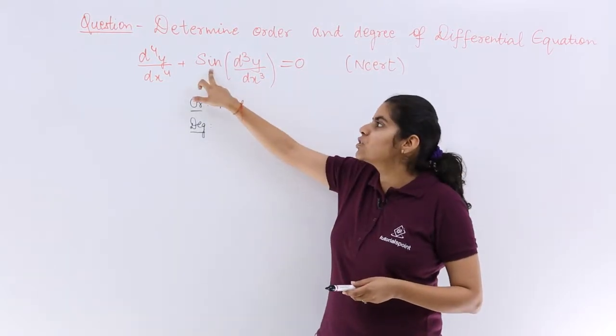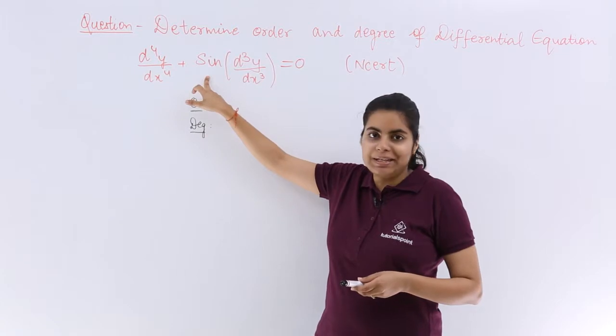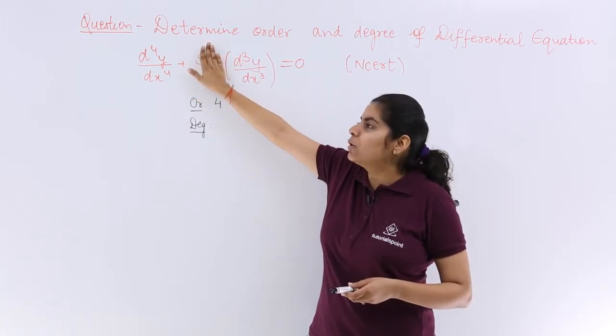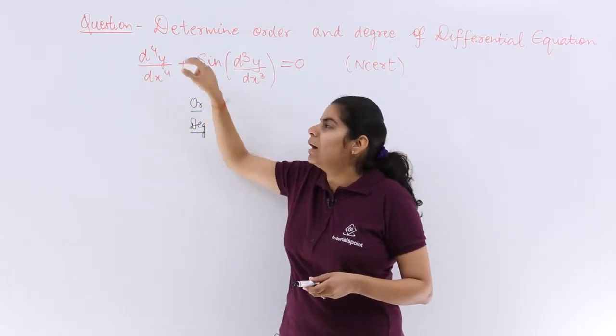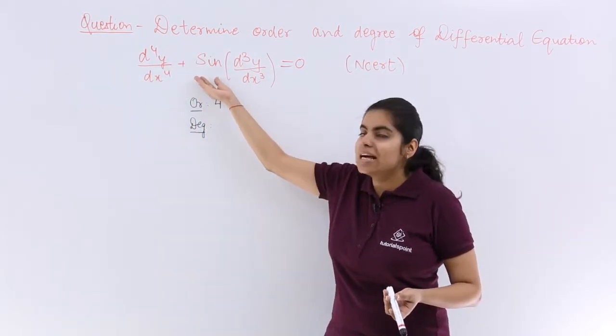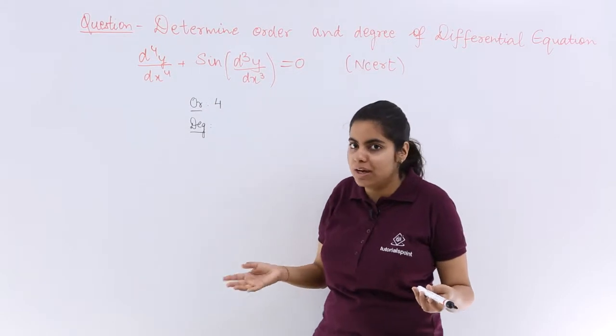But here because of this sine, my things are getting disturbed. Had this sine not been there, it would be very easy for us. You would have directly told that this is the order, the power is 1. But this has sine, so degree is not defined.